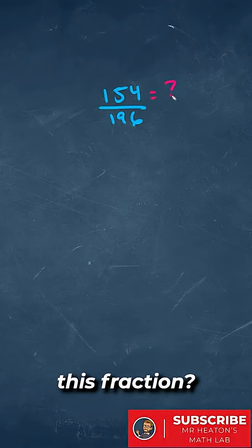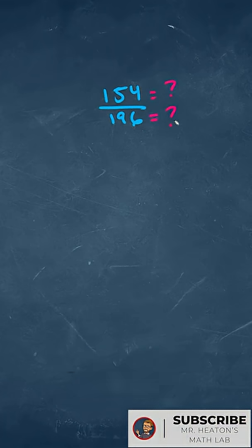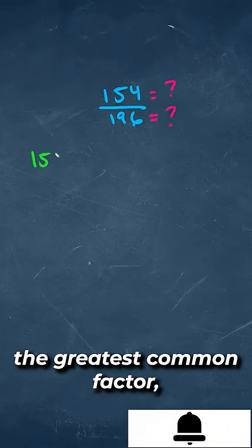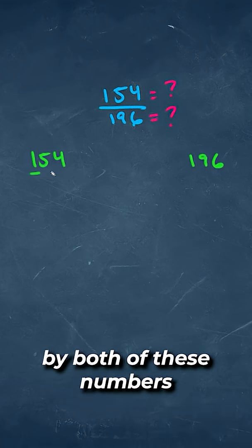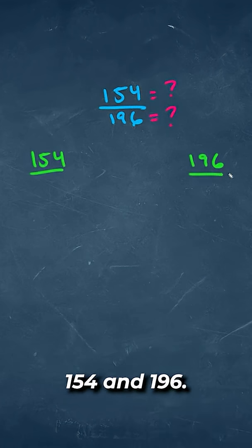So how can you simplify this fraction? Well, a trick that we can do is looking for the greatest common factor, which is the largest number that is divisible by both of these numbers, 154 and 196.